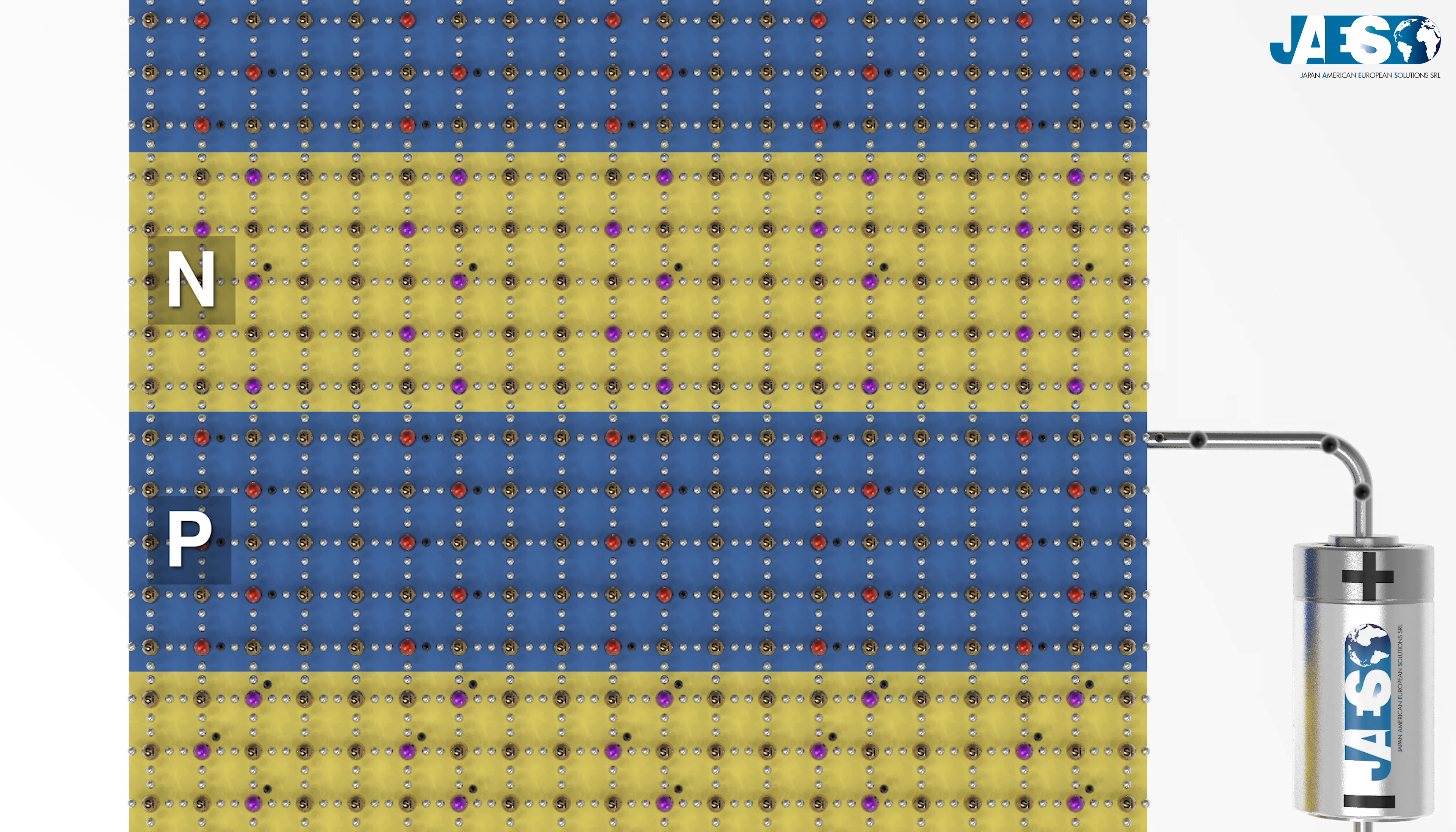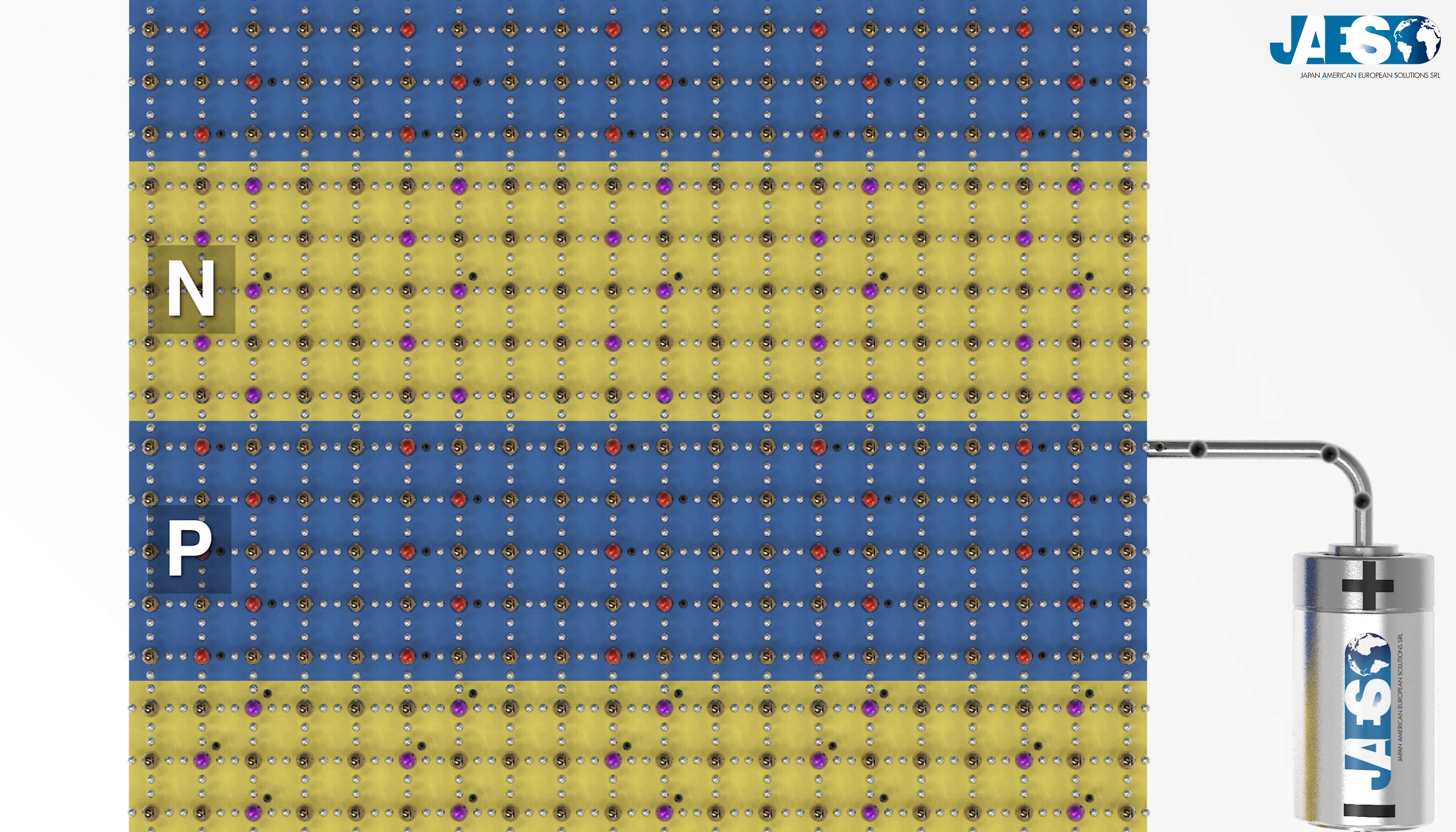Now the P semiconductor has many more electrons than the N semiconductor above. For this reason, the P layer acts like an N layer towards the upper N layer, so the electrons pass through the central depletion region.